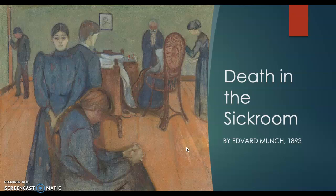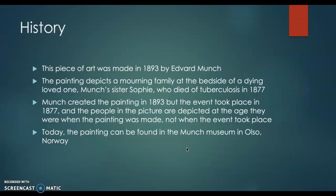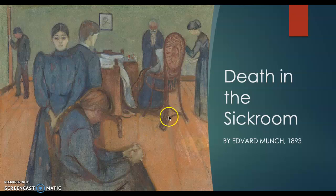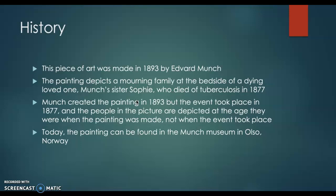Hello, my name is Joshua Edwards and the piece of artwork that I have picked for the final project is titled Death in the Sick Room. A little bit of history on Death in the Sick Room: this piece of art was made in 1893 by Edvard Munch. The painting depicts a mourning family at the bedside of a dying loved one, Munch's sister Sophie, who can't really be seen in the picture, but this is her figure sitting in this chair. She died of tuberculosis in 1877.